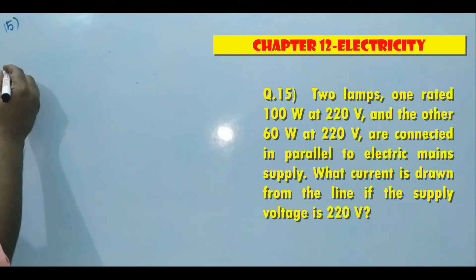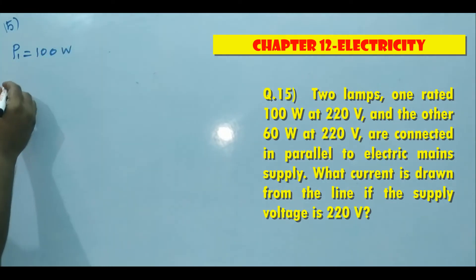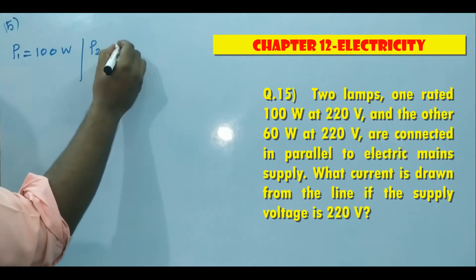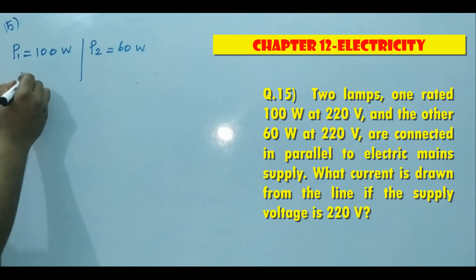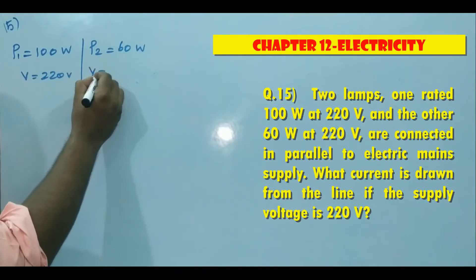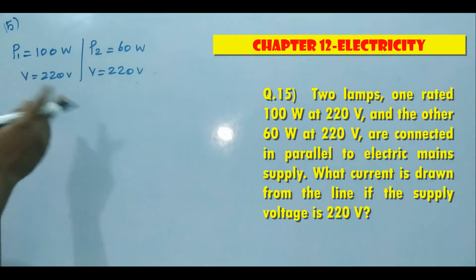So first bulb, we will take power of first bulb P1 is 100 watt, then power of second bulb P2 is 60 watt. Both connected in 220 volt power supply. They are connected in parallel to the mains.